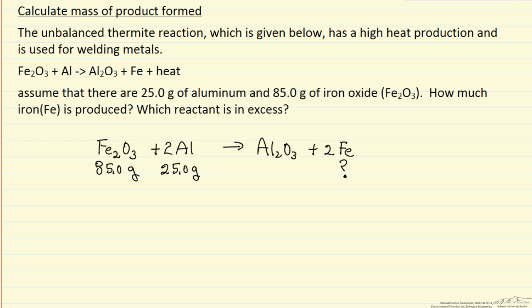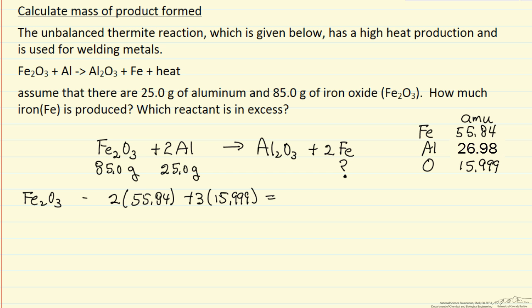First, we have to convert to moles. I've used the periodic table to look up the atomic weights for the elements. That means I can calculate the molecular weight of Fe2O3. That weight is going to be two irons plus three oxygens, multiplied out.